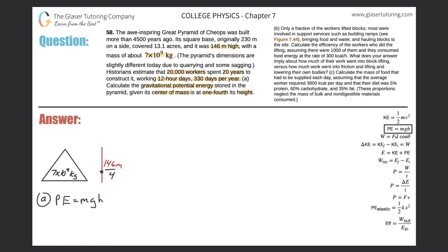The potential energy stored in this pyramid is going to be the mass of the entire pyramid — 7 times 10 to the 9 — multiplied by the acceleration due to gravity, 9.80, multiplied by the height. The final height minus the initial height, where the initial height we assume to be zero. The final height is taken from the center of mass: 146 over 4. So this is simply 146 over 4. Therefore the potential energy is 7 times 10 to the 9, times 9.8, times 146 over 4.